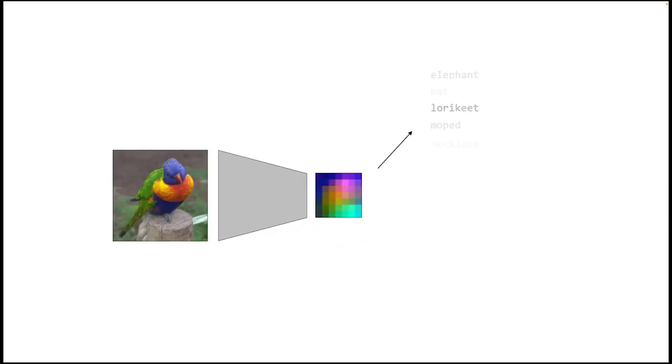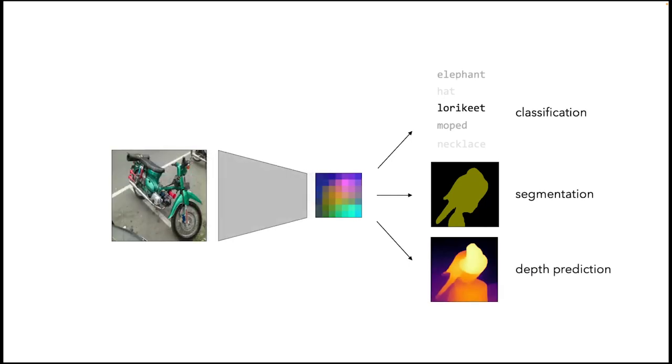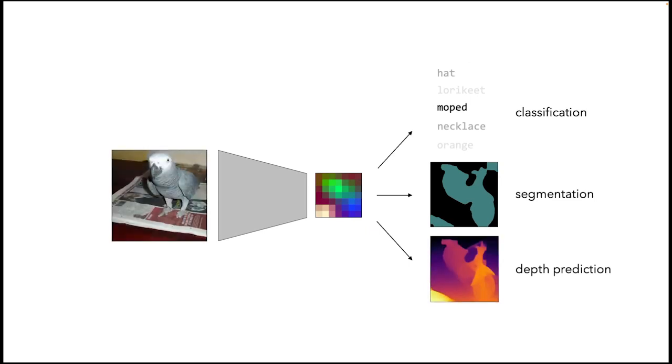Much of computer vision research is focused on learning semantically meaningful features. These features often form the backbone of different dense prediction tasks, including image classification, semantic segmentation, and depth estimation.